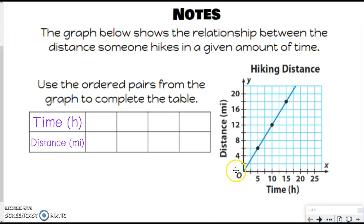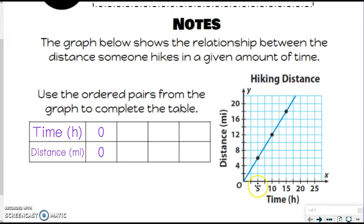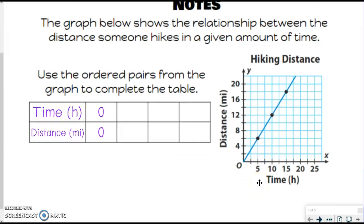We actually want to start with (0, 0) here. I know there's not a dot on it, but that is what we want to start with. So at 0 hours, the hiker has walked 0 distance. Makes sense. Then we look just at our points. We're not looking at anything else right now, just looking at these points.